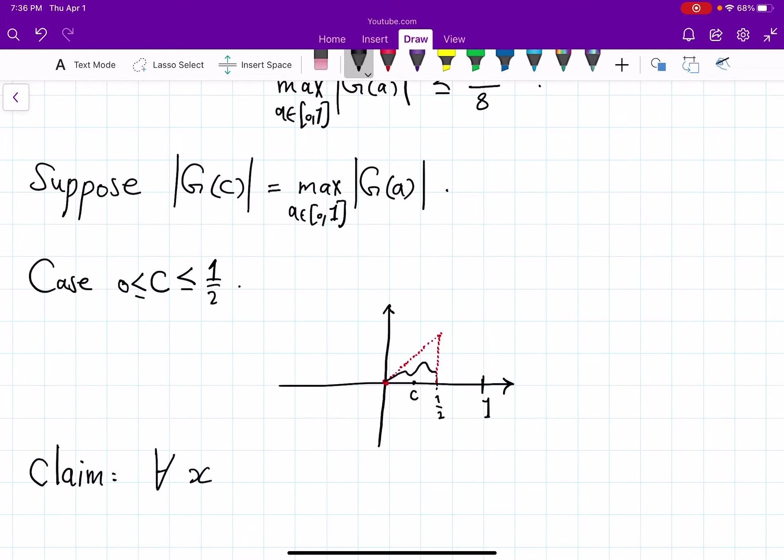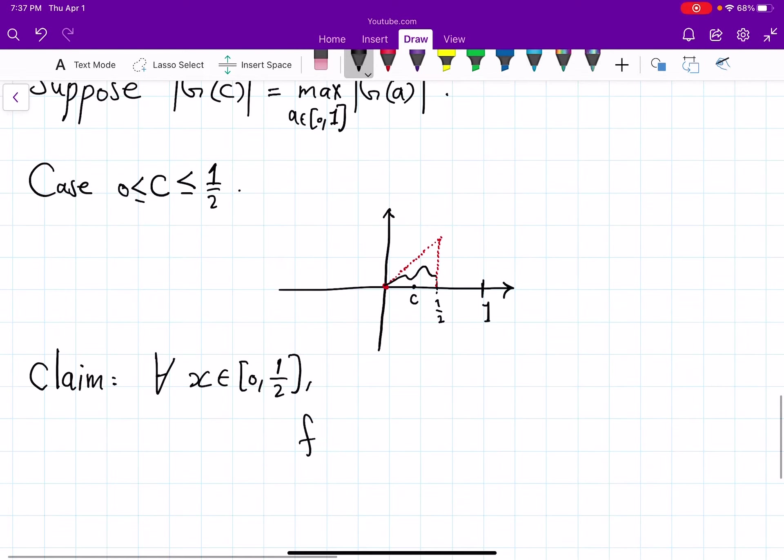So claim. So let me write down precisely what I mean. Claim is for every x between 0 and 1 half, f(x) is less than or equal to y equal x function, right? So this is the slope 1 function that begins at 0,0 so it's just y equal x.